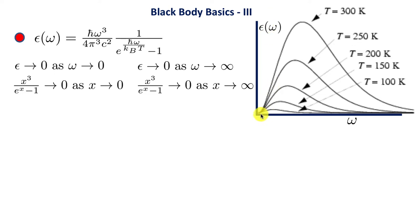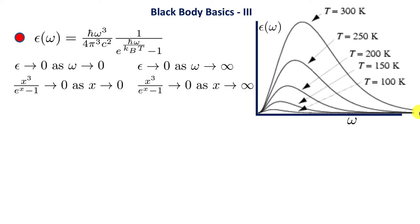From the graph, at lower temperatures there is much less radiated energy, but as we increase the temperature from 150 to 200, 250, and 300 degrees, there is progressively more radiation. The behavior is exactly as predicted: for small ω, ε → 0; for large ω, ε also → 0, decreasing exponentially.